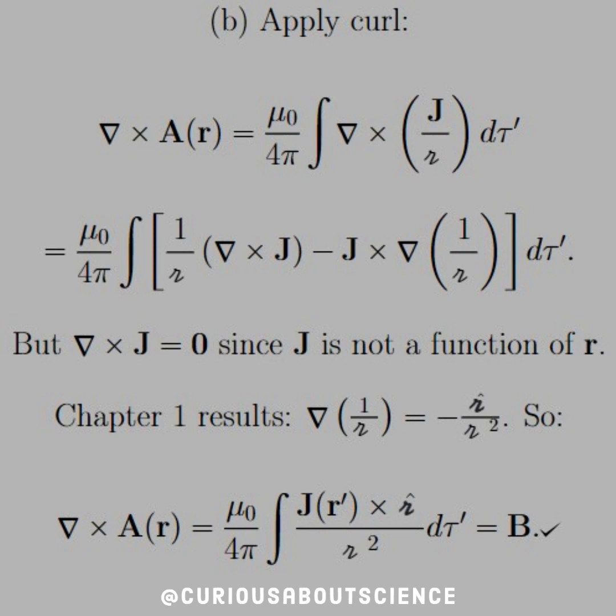But also, we know from chapter 1 that the derivative or del operating on 1 over script r is equal to the negative r hat over script r squared, just as the quotient rule, but in the r hat direction.